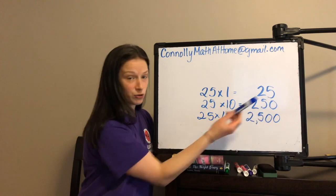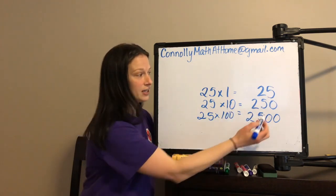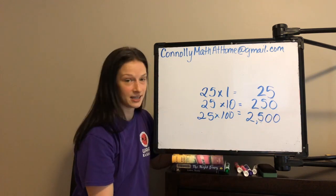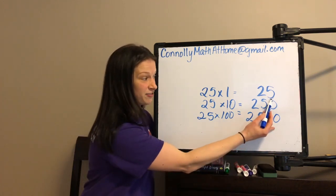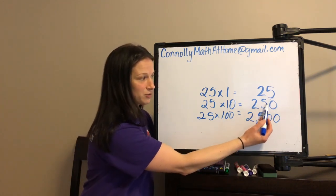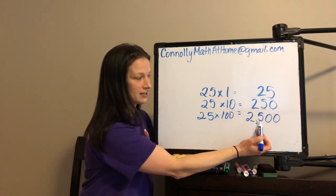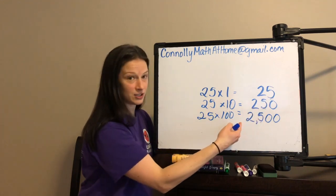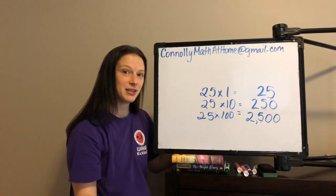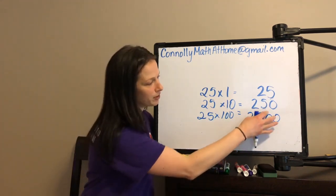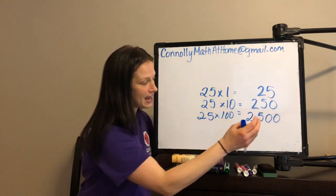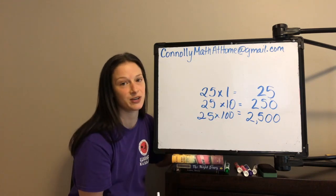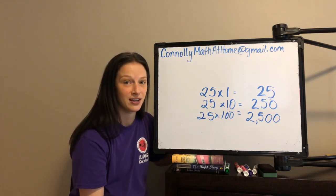We can clearly see that when a factor gets 10 times greater, the product gets 10 times greater. Let's just pay attention to the 5: each time our product got 10 times greater, the digit 5 got 10 times greater — 5 ones, to 5 groups of 10, to 5 groups of 100. So the digits are shifting to the left. That's something we're familiar with: whole numbers and multiples of 10, multiples of 100. When the factor gets 10 times greater, the product gets 10 times greater.